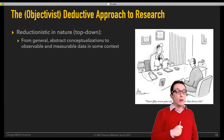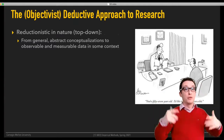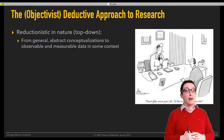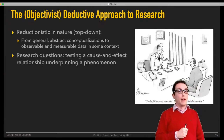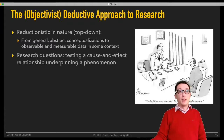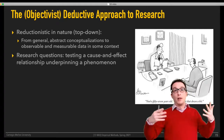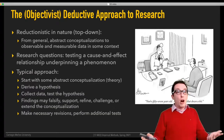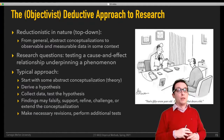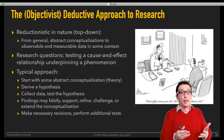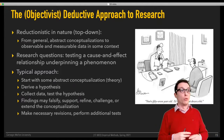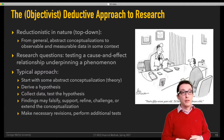How do people build knowledge? By increasingly furthering their understanding of the causal workings of the universe—think of the natural sciences. These are all essentially examples of a deductive approach to research. These things tend to be reductionistic in nature—top-down. You start with some abstract concepts and reduce those down to observable and measurable things and data in a particular context. Traditional research questions here have to do with testing a cause-and-effect relationship. You start with some concepts and theory, derive some hypothesis, collect some data, test the hypothesis using statistics, and the findings may either falsify or support that theory—forcing you to refine or challenge it.